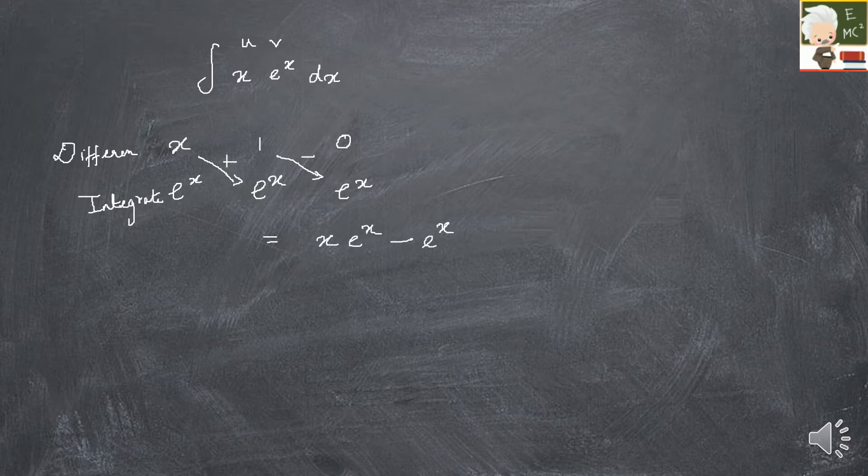That was a simple example. What you are doing is: differentiate the first term until it reaches 0, integrate the second term repeatedly, then cross-multiply the terms and add alternating plus and minus signs. It is an easy and time-saving trick.